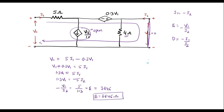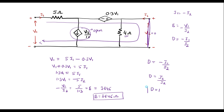For parameter D: D = −I1/I2. Since I1 = −I2, substituting gives D = −(−I2)/I2 = I2/I2 = 1. Therefore D = 1 (dimensionless).